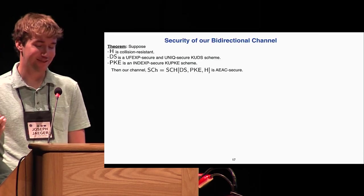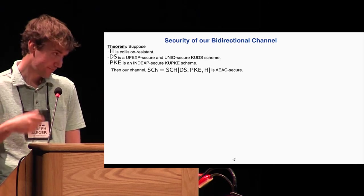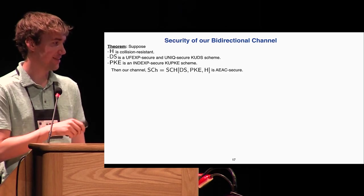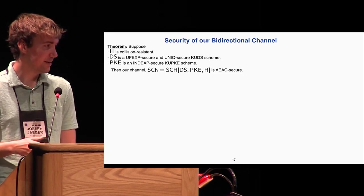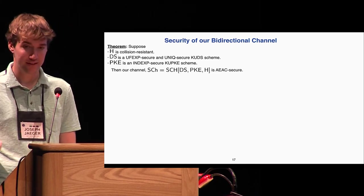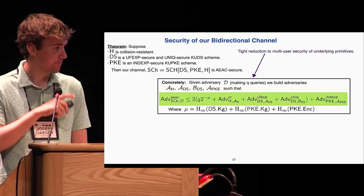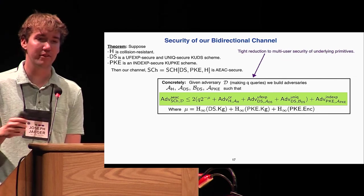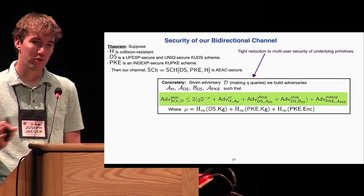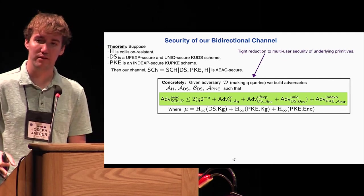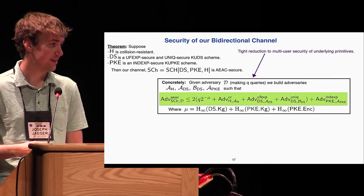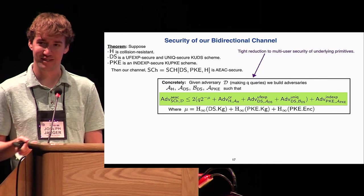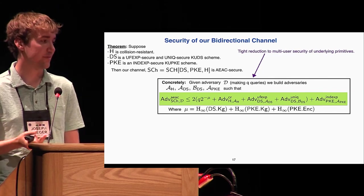Finally, a construction is not very useful without a proof of security. We proved that our channel is secure under the expected security notions we've been discussing, together with a notion of uniqueness for the digital signature scheme. Concretely, this proof consisted of a tight reduction from AEAC to multi-user versions of the underlying security notions. The multi-user security notions arise quite naturally because we're sampling new key pairs with every ciphertext we send.